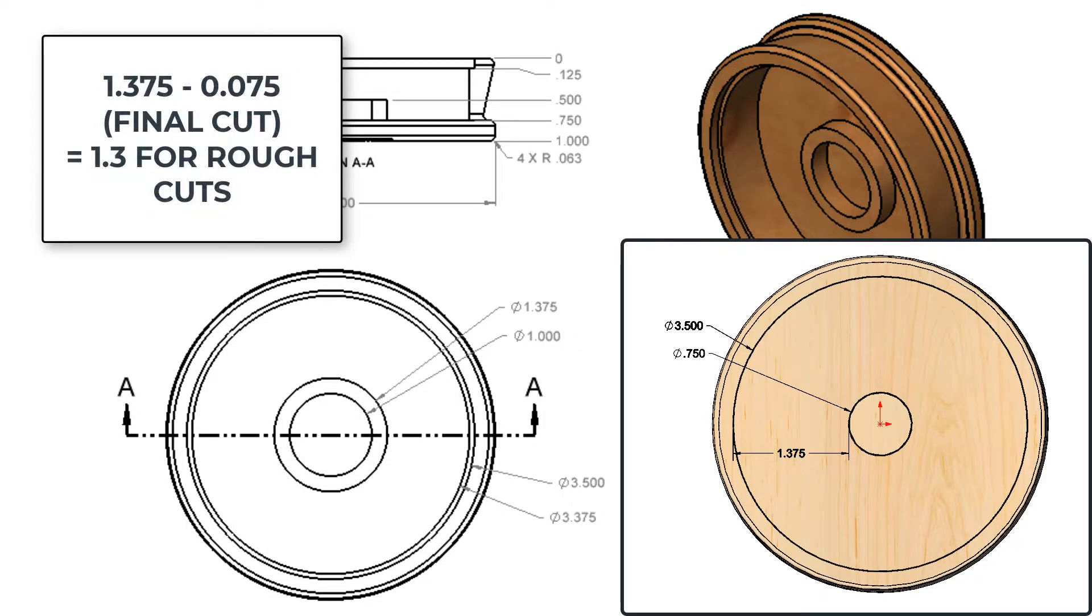I would like to take a final pass of between 25 and 75 thou and would like the cutter to use approximately 70% of its diameter on each cut. If I leave 75 thou for the final pass then there will be 1.3 inches of material to remove with my roughing cuts.